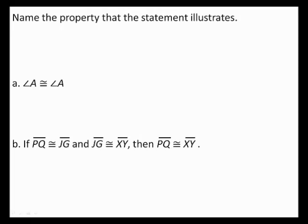Name the property that the statement illustrates. A: angle A is congruent to angle A. B: if segment PQ is congruent to segment JG and segment JG is congruent to segment XY, then segment PQ is congruent to segment XY.